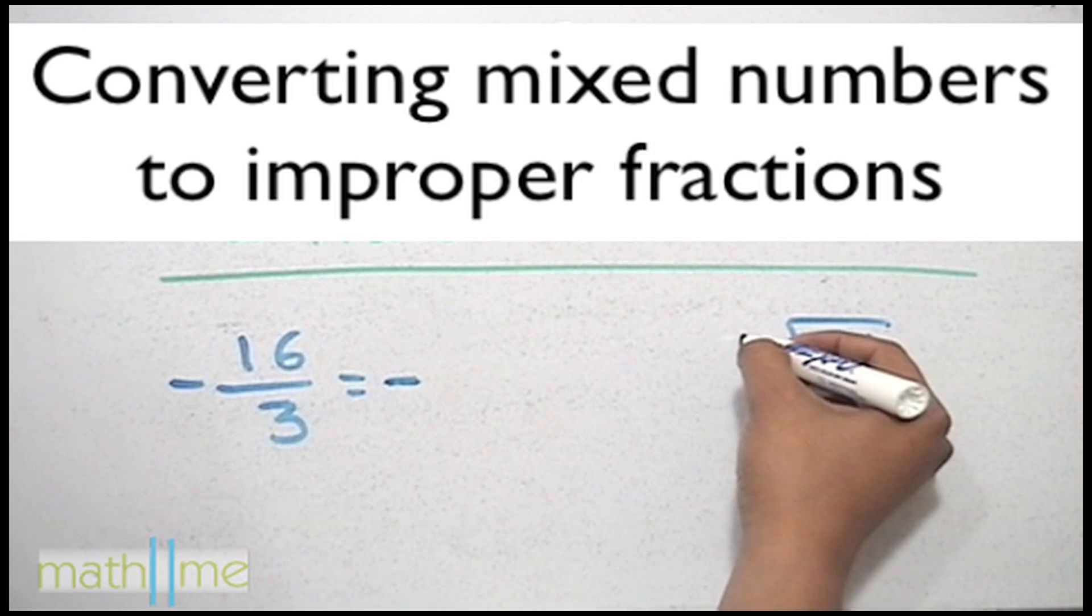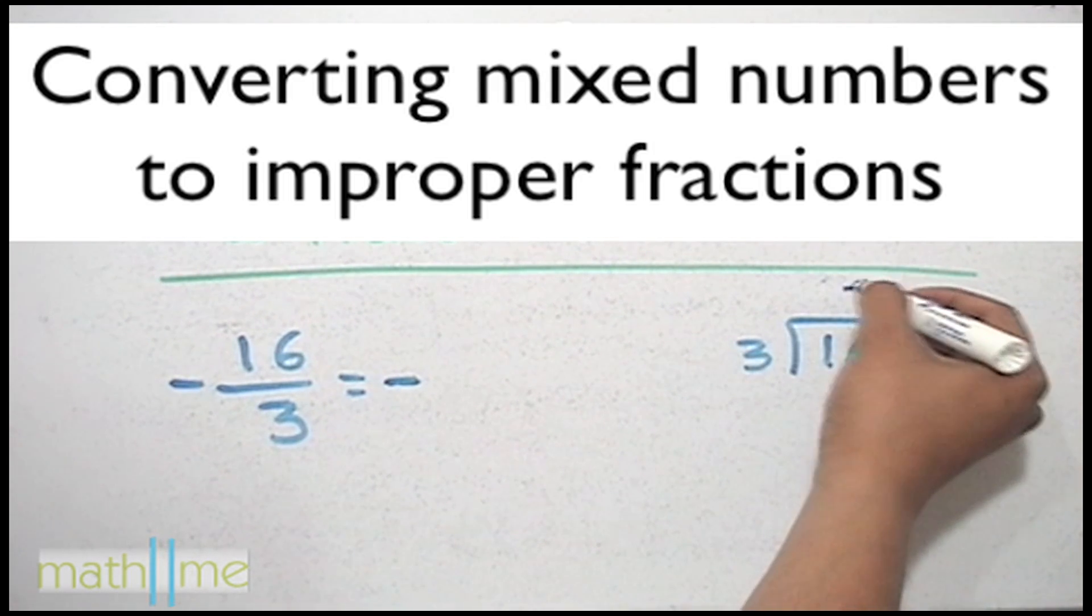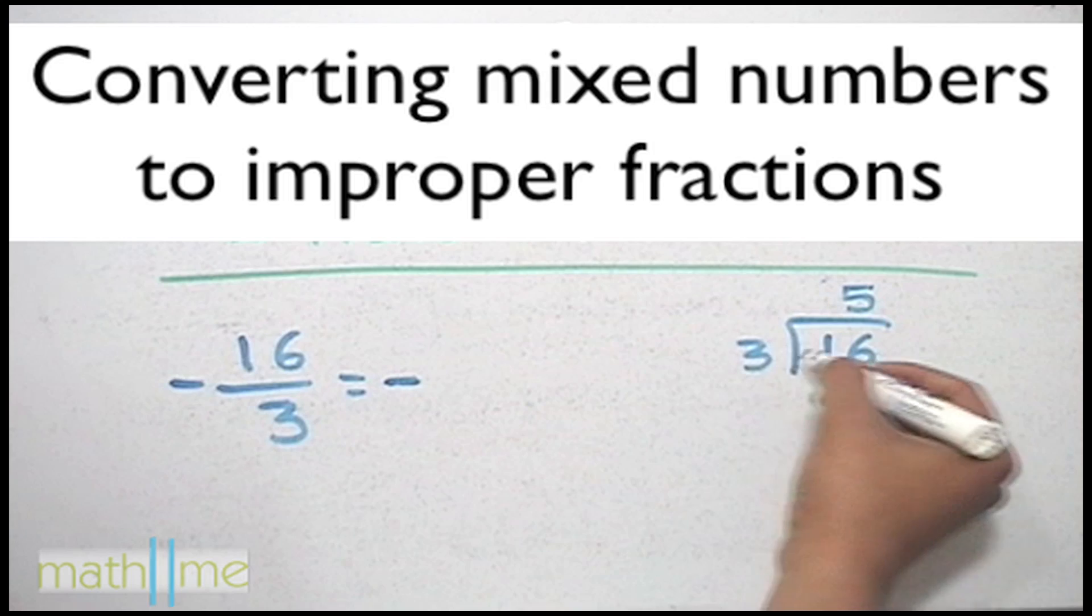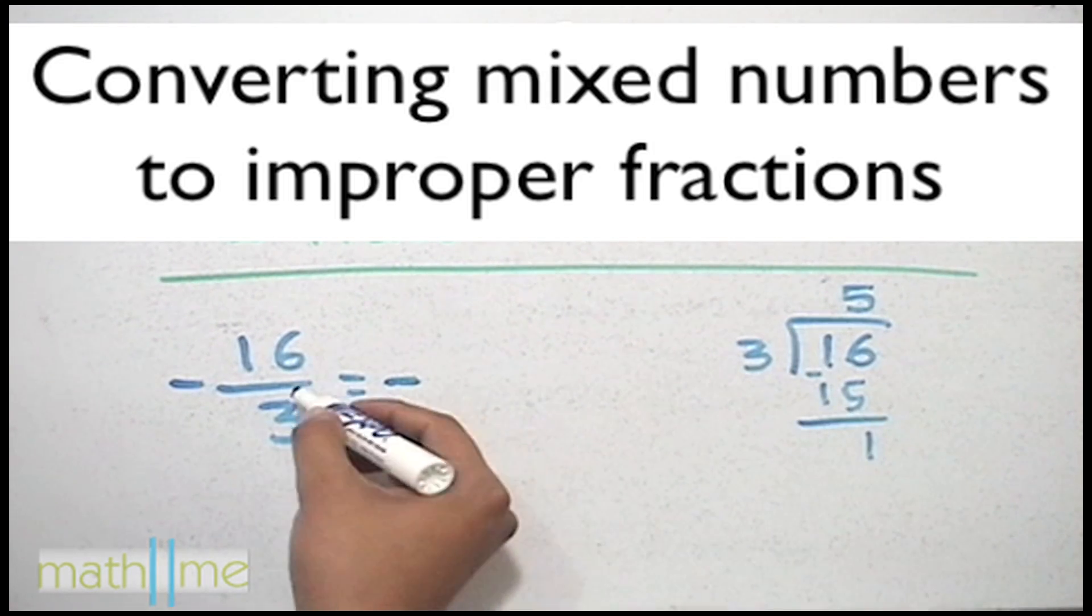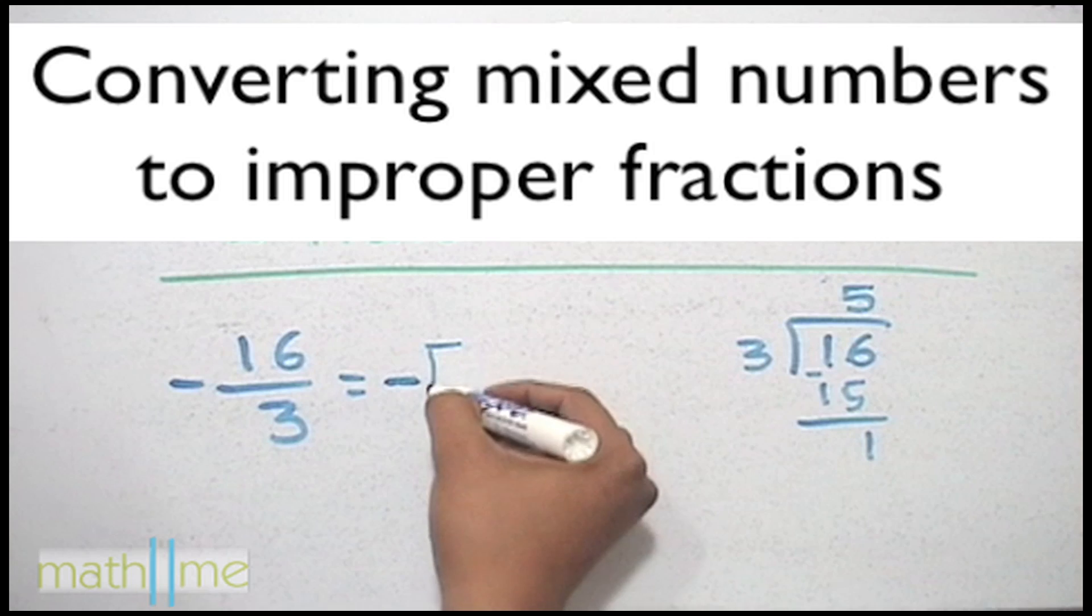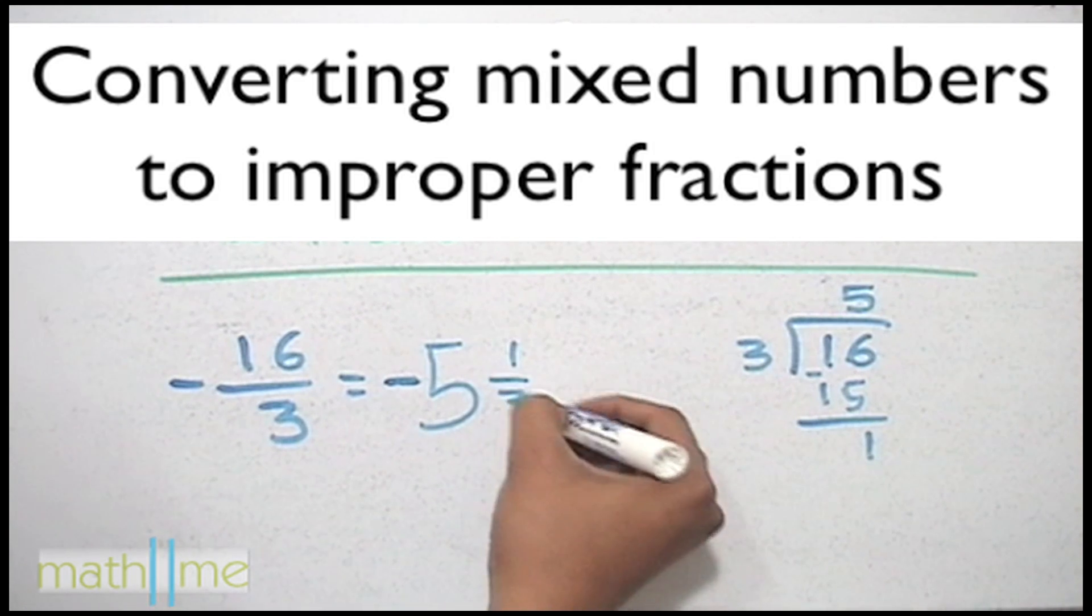That is, divide the numbers. So how many times can 3 go into 16? The closest answer is 5. Multiply the numbers. Later we subtract them. We get 1. So converting this improper fraction, we get 5 whole number and 1 third, which is the mixed number equivalent to this improper fraction.